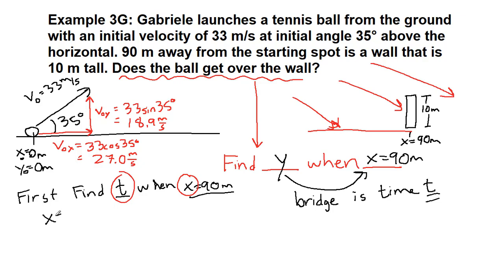And then plug in numbers. We have 90 equals 0 plus 27 times t. So we'll divide both sides by 27.